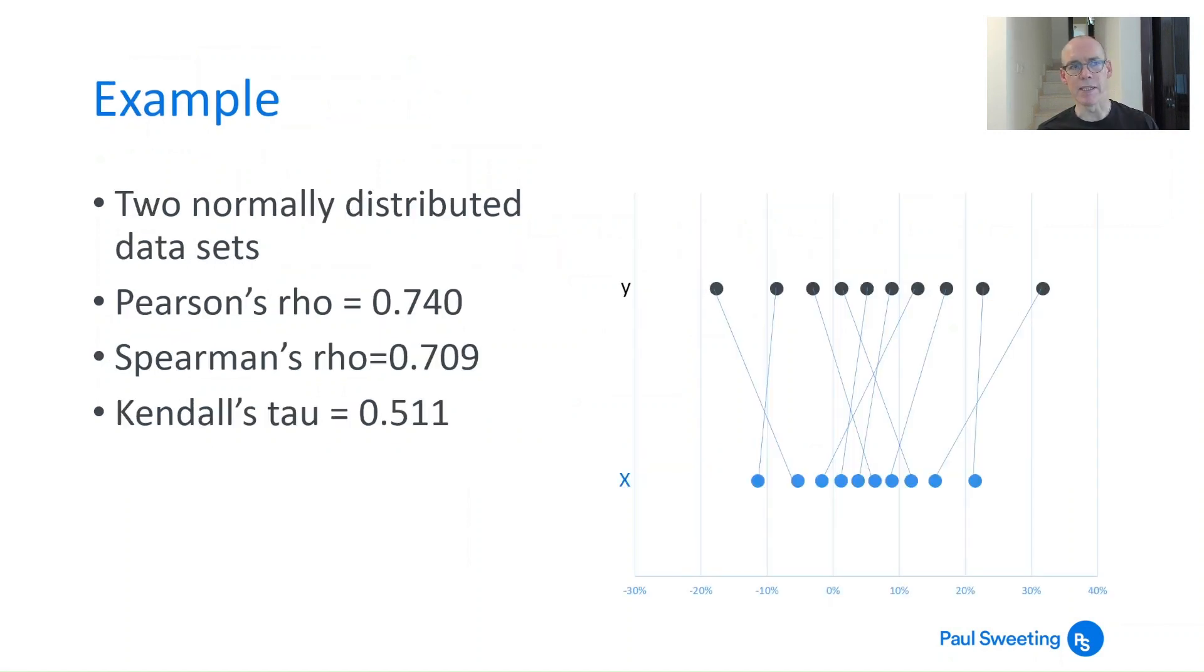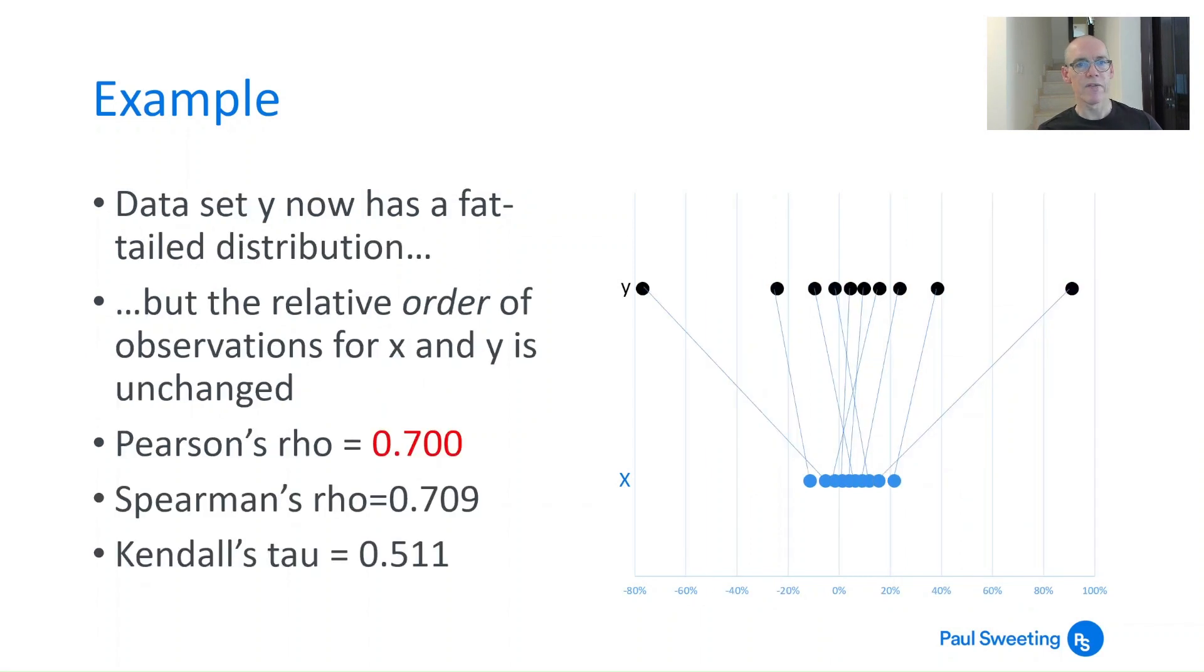This is just going back to the example I used in the previous presentation. You've got two normally distributed data sets here. Pearson's rho is 0.74, Spearman's rho is 0.709, Kendall's tau is 0.511. If you decide that actually Y isn't normally distributed, it's now got fat tails, so you just stretch it a bit, but you keep the order of the observations the same, what you find is that Pearson's rho changes because your covariances and your standard deviations change. But Spearman's rho and Kendall's tau, because they're rank correlation coefficients, they don't change.